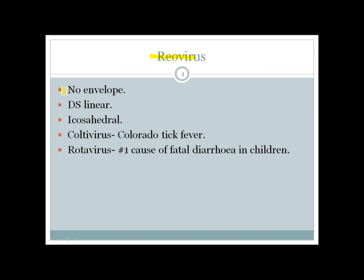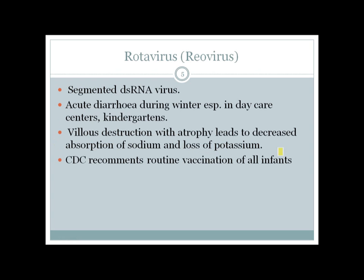There are two main viruses in the Reovirus group: Coltivirus, which causes Colorado tick fever, and Rotavirus, which is the number one cause of fatal diarrhea in children. Rotavirus is a double-stranded RNA virus and is also segmented. It especially causes diarrhea in winter in daycare centers and kindergartens.